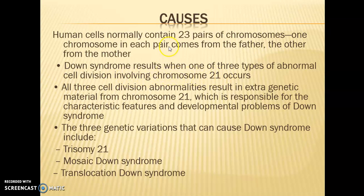The problem related to Down syndrome happens in chromosome number 21. Chromosome 21 is an autosome and should normally exist as a pair — two copies. However, there is an abnormality in cell division leading to three copies of chromosome 21 — that is why we call it trisomy, meaning three instead of the normal two.